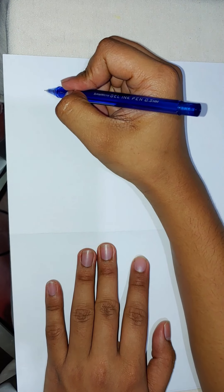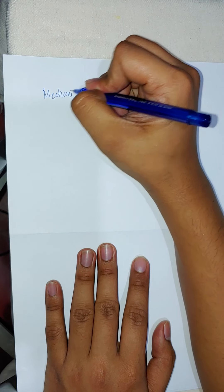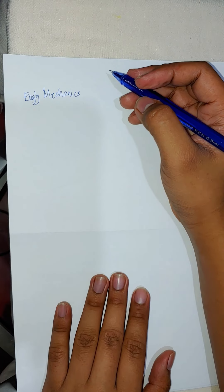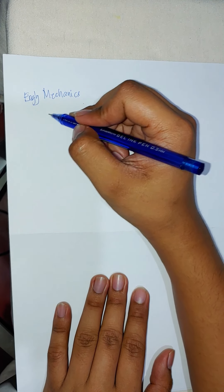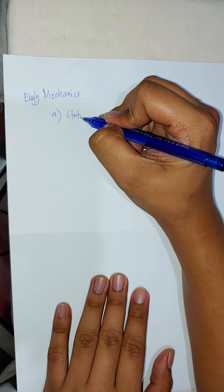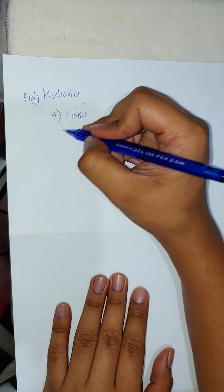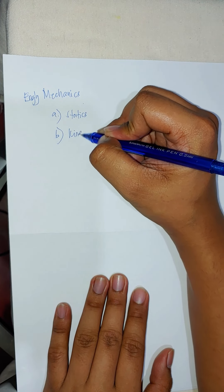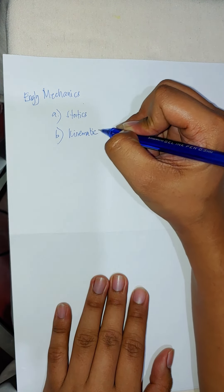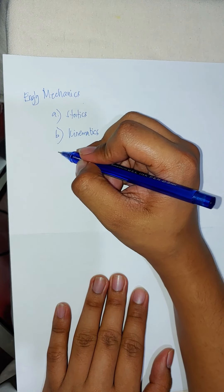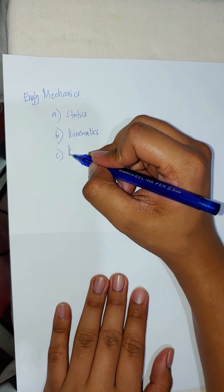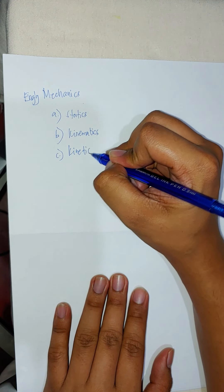To summarize what we have discussed: engineering mechanics is a branch of science that talks about the motion of bodies. It has three branches — statics concerns bodies at rest; dynamics of rigid bodies includes kinematics, which talks about position, acceleration, velocity, and displacement of a particle without regarding forces; and kinetics, which talks about bodies in motion.